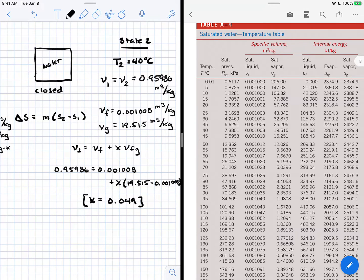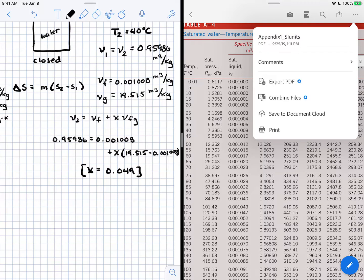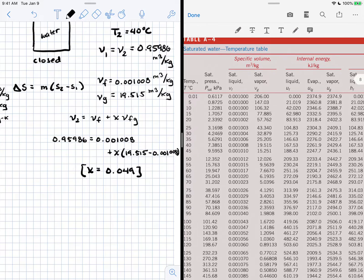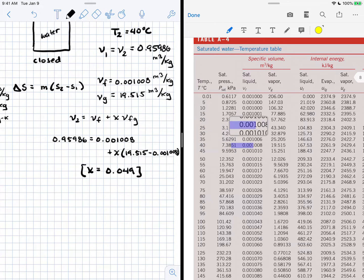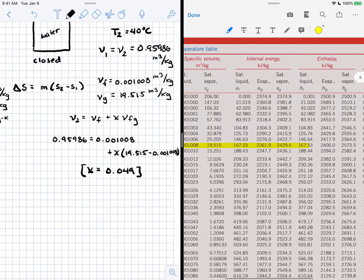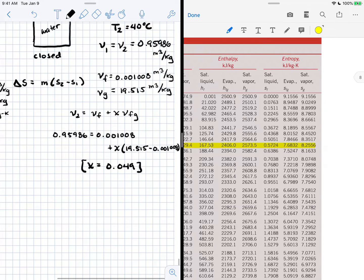With that information, we can calculate all other properties at state 2, but really all we want is the entropy. So instead of writing down internal energy and all these other properties, we'll just write down the entropy values. Let me highlight this column so I don't get lost. Looking at the entropy column, S_F is 0.5724 kJ/kg·K and S_G is 8.2556.